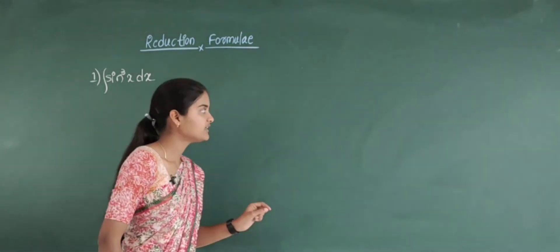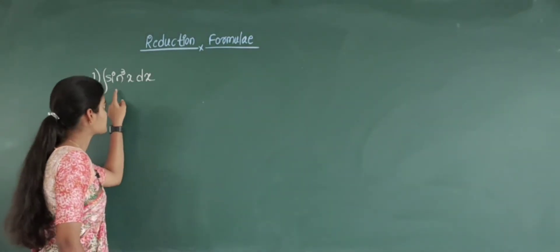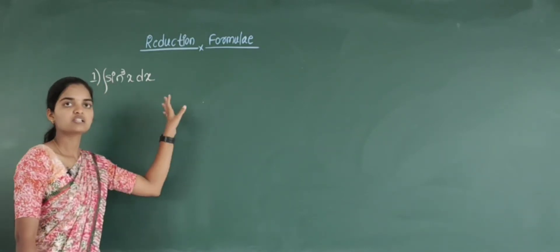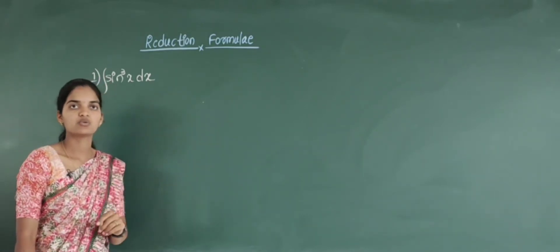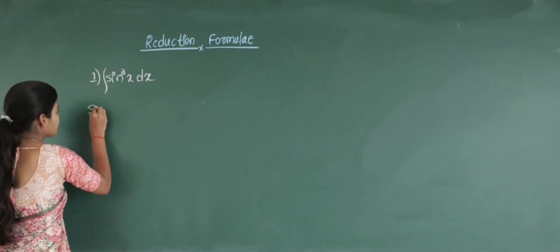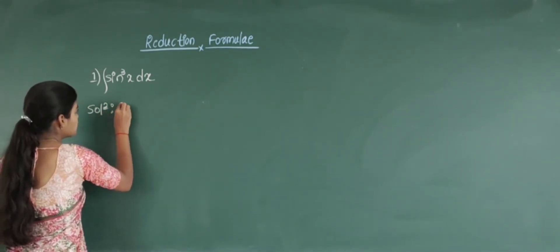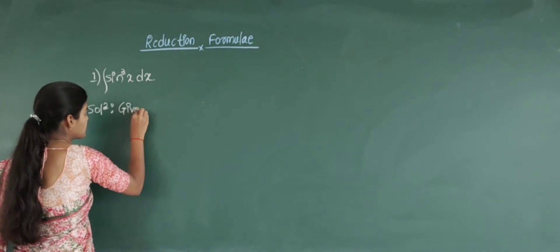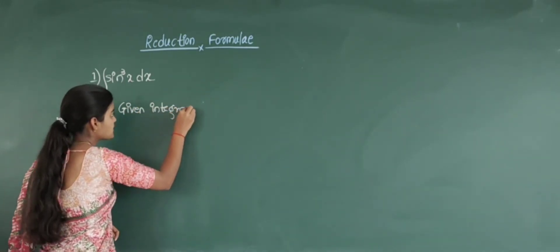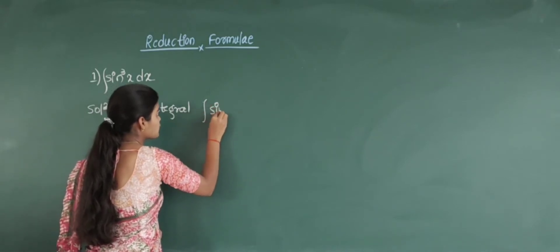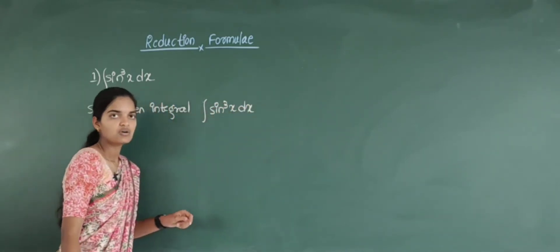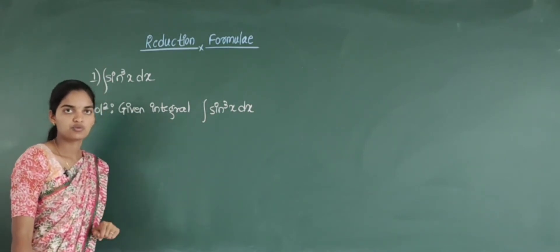So the first example I will take is integration of sin cube x. This integration of sin cube x we will solve by using the reduction formulae. In the solution, always write the given things first. So here the given integral is integration of sin cube x into dx. Now we will write the reduction formulae first.